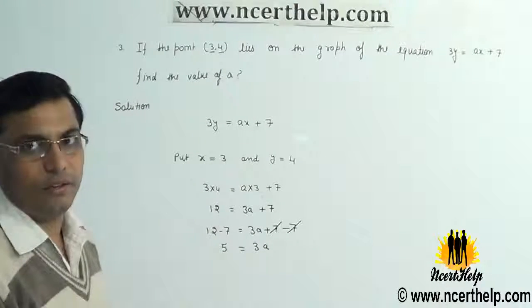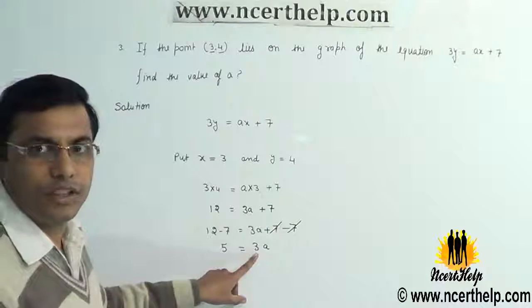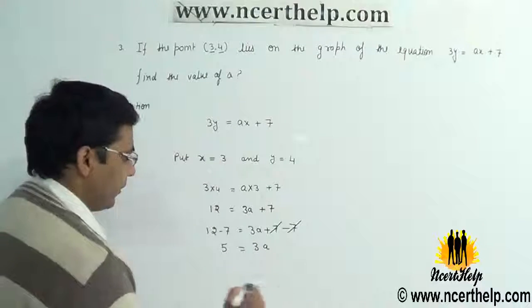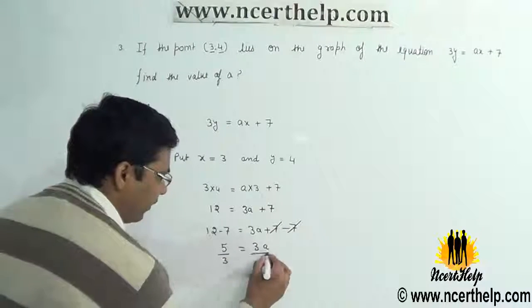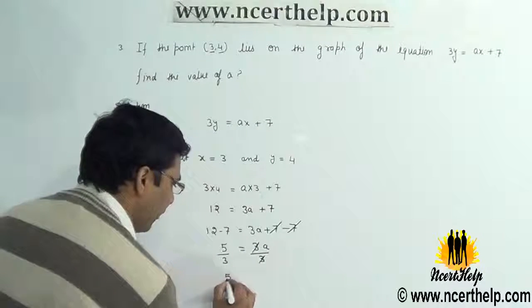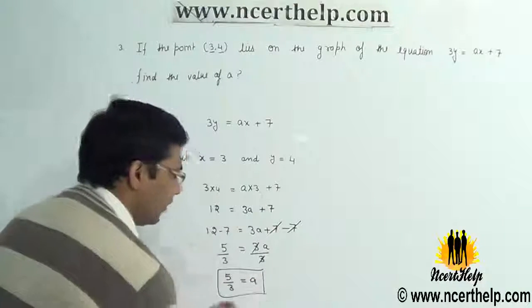Now I want to get the value of a, so I want to reduce this 3 term. To reduce the 3 term, we have to divide both sides by 3. When we divide both sides by 3, 3 will cancel out and we will get 5/3 = a. So a = 5/3.